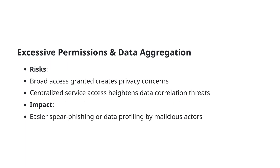Let's examine the topic of excessive permissions and data aggregation in the context of AI systems. One major risk involves granting broad access, which can lead to significant privacy issues. When services are centralized, the risk of data correlation increases, making it easier for an attacker to profile users or target them for spear phishing attacks.